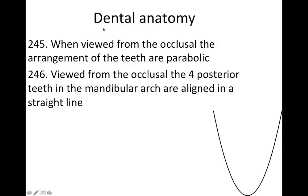When viewed from the occlusal plane, the arrangement of teeth is going to be parabolic — I've got a little picture of a parabola right here. And when viewed from the occlusal, the four posterior teeth in the mandibular arch are aligned in a straight line, so the two molars and two premolars are aligned in a straight line.